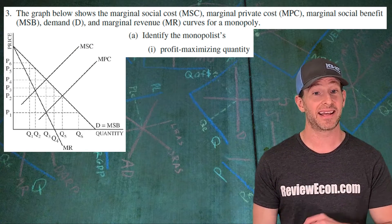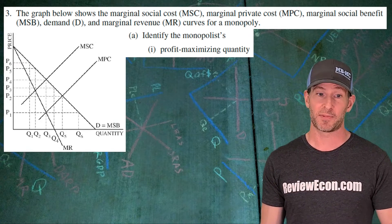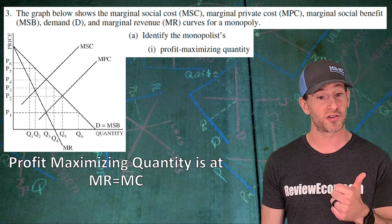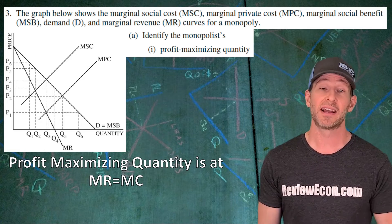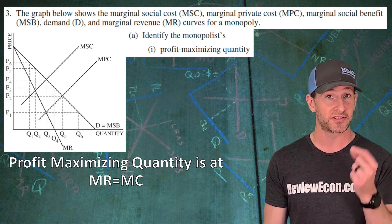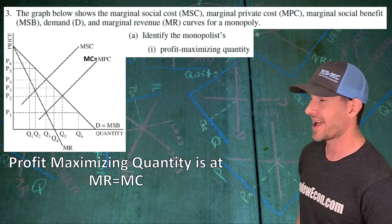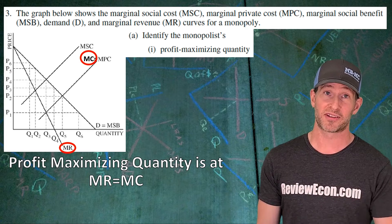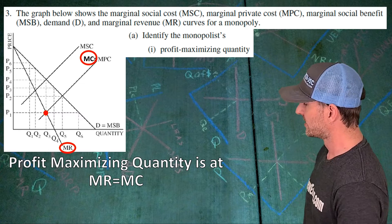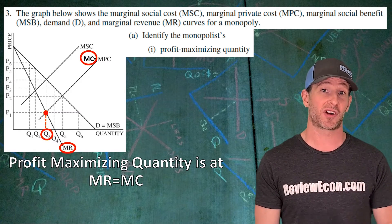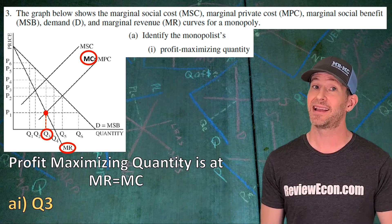The first part of the question asks us to identify the monopolist's profit maximizing quantity. Like all other firms, a monopoly will profit maximize where marginal revenue equals marginal cost. The firm's marginal cost curve is the marginal private cost, because those are the private costs that fall on the producers. Find where MR equals MPC, drop down, and that gives us our profit maximizing quantity of Q3.